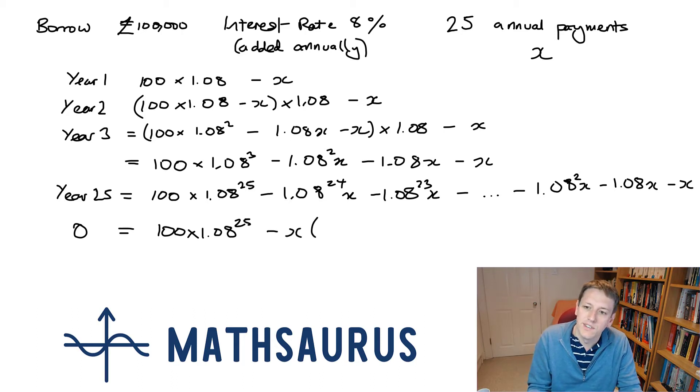And I'm going to write the sequence down from right to left now instead. So I've got 1 and then this one is 1.08 plus 1.08 squared and then all the way up to 1.08 to the 23 and 1.08 to the 24.